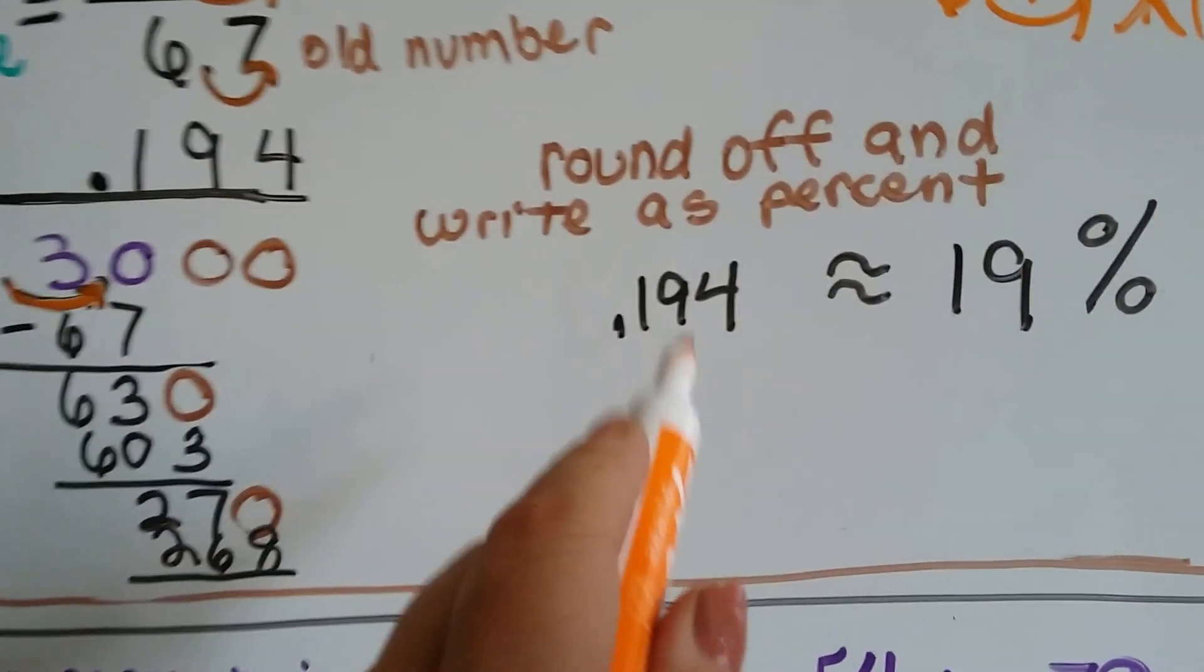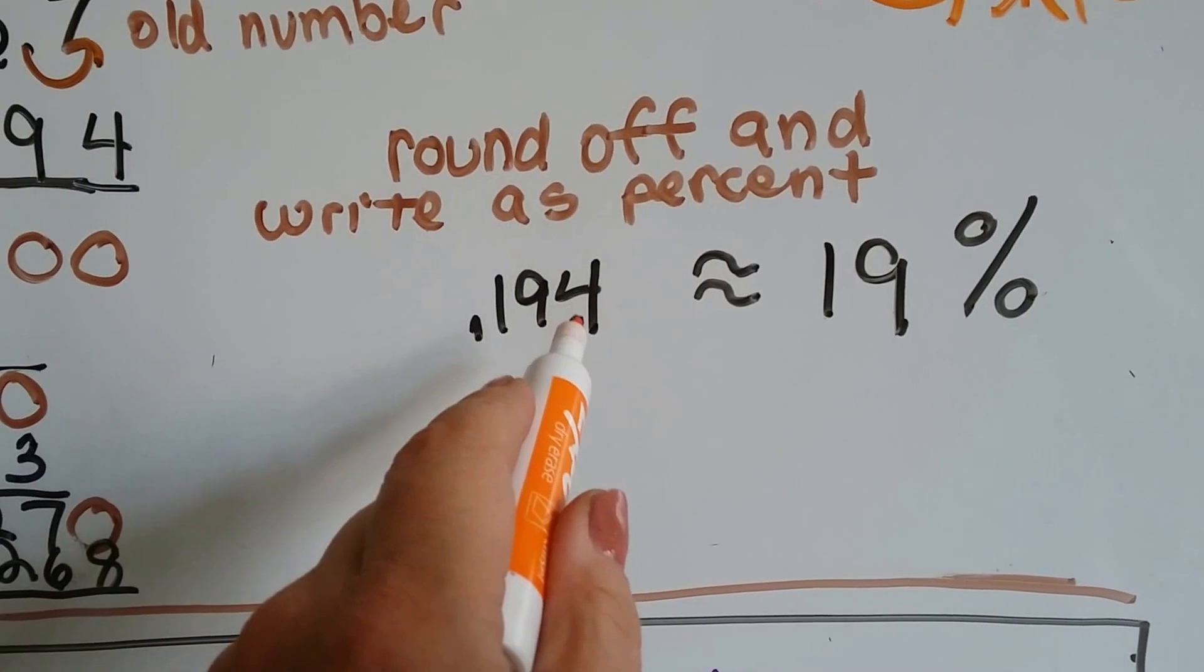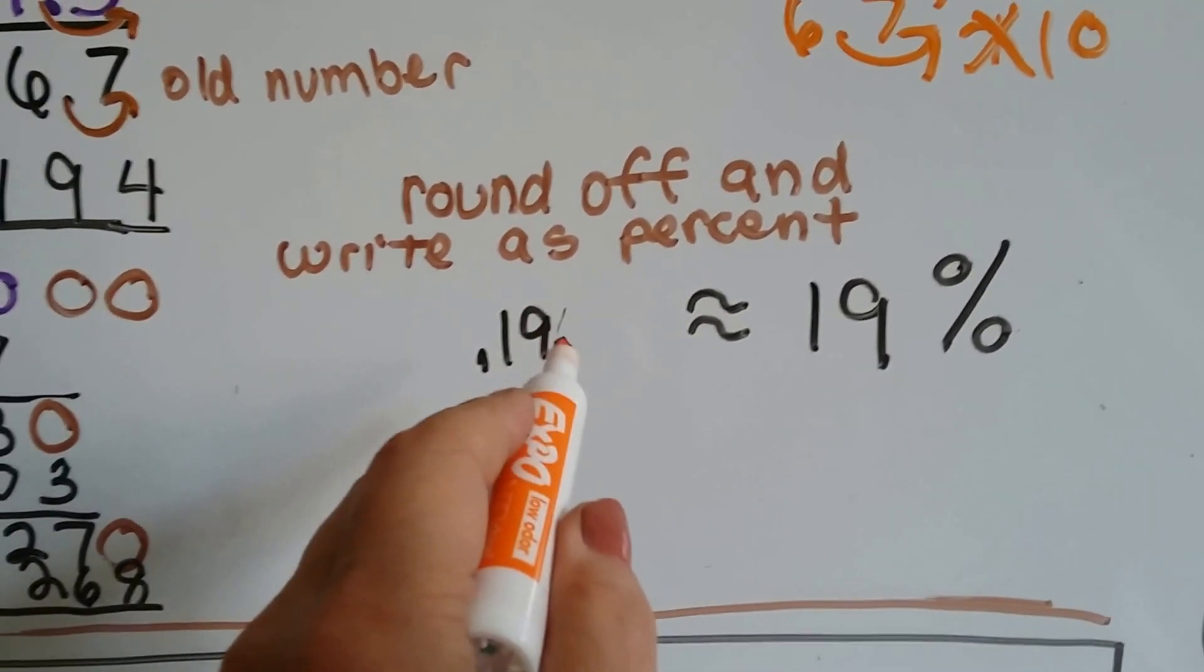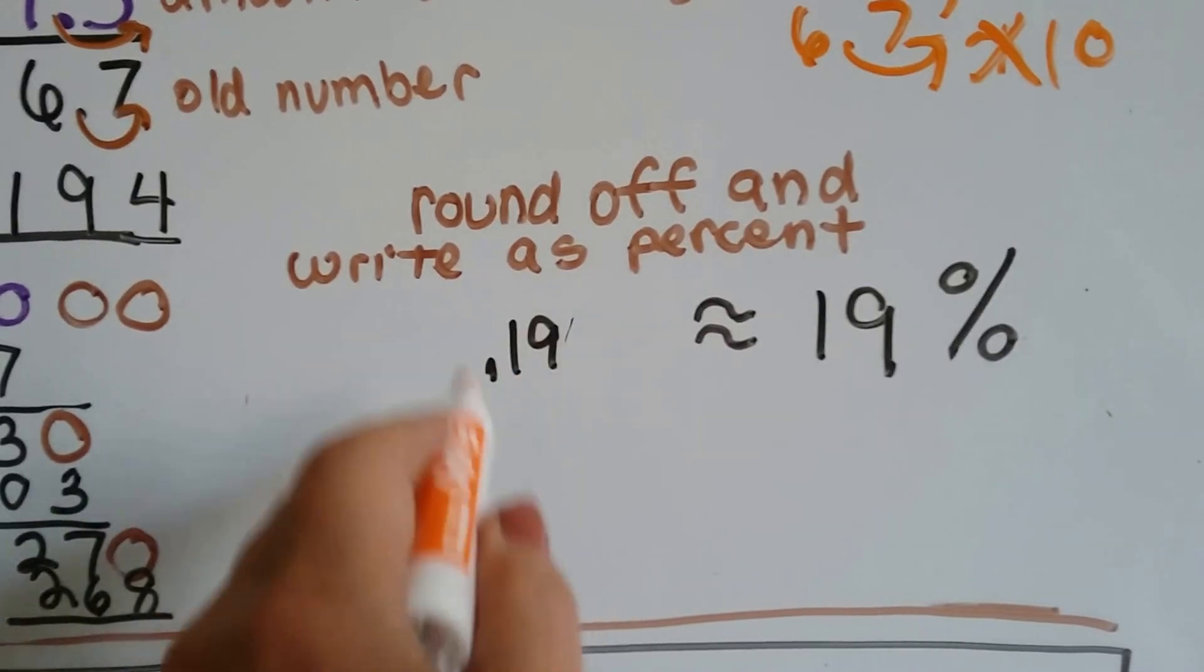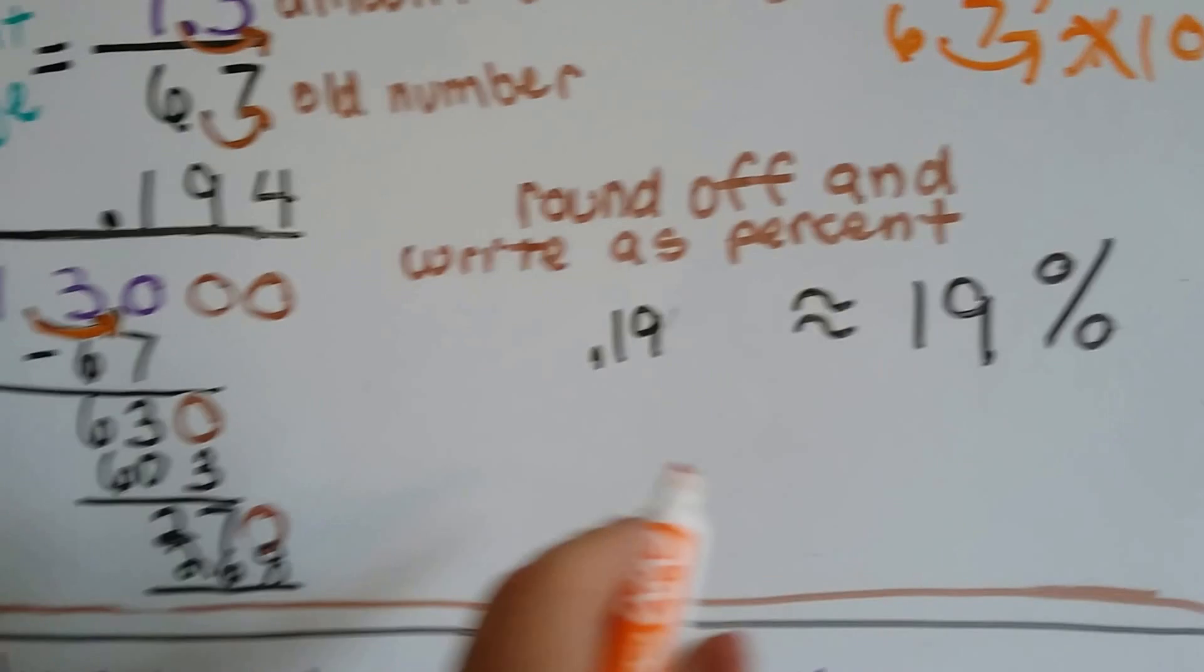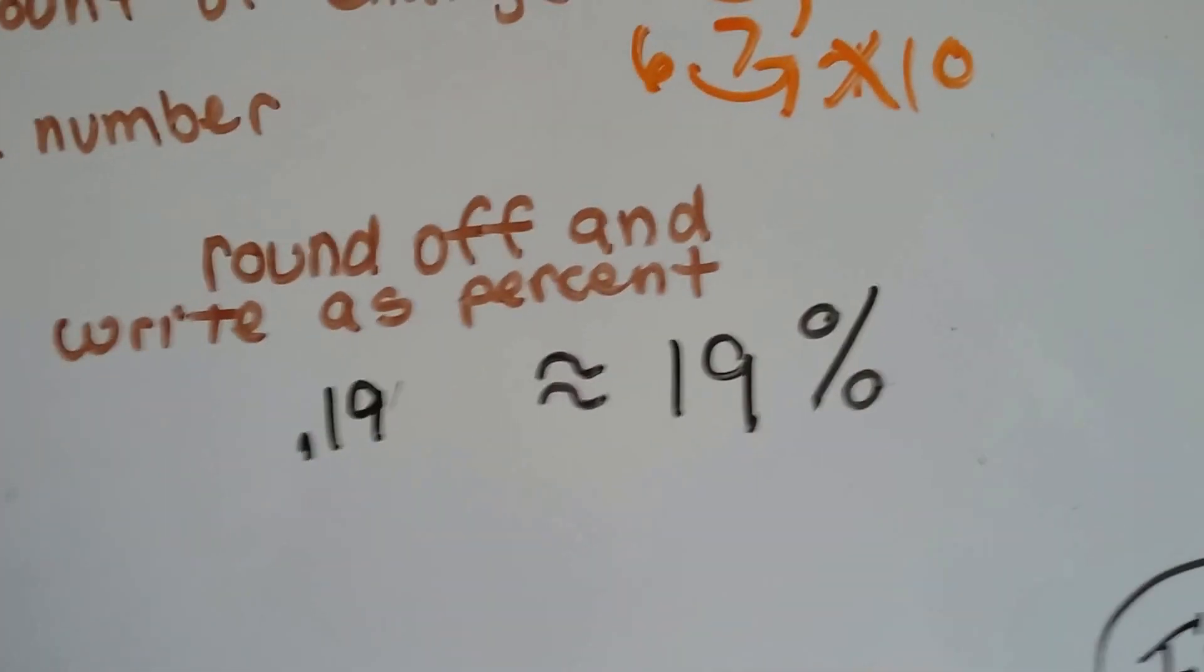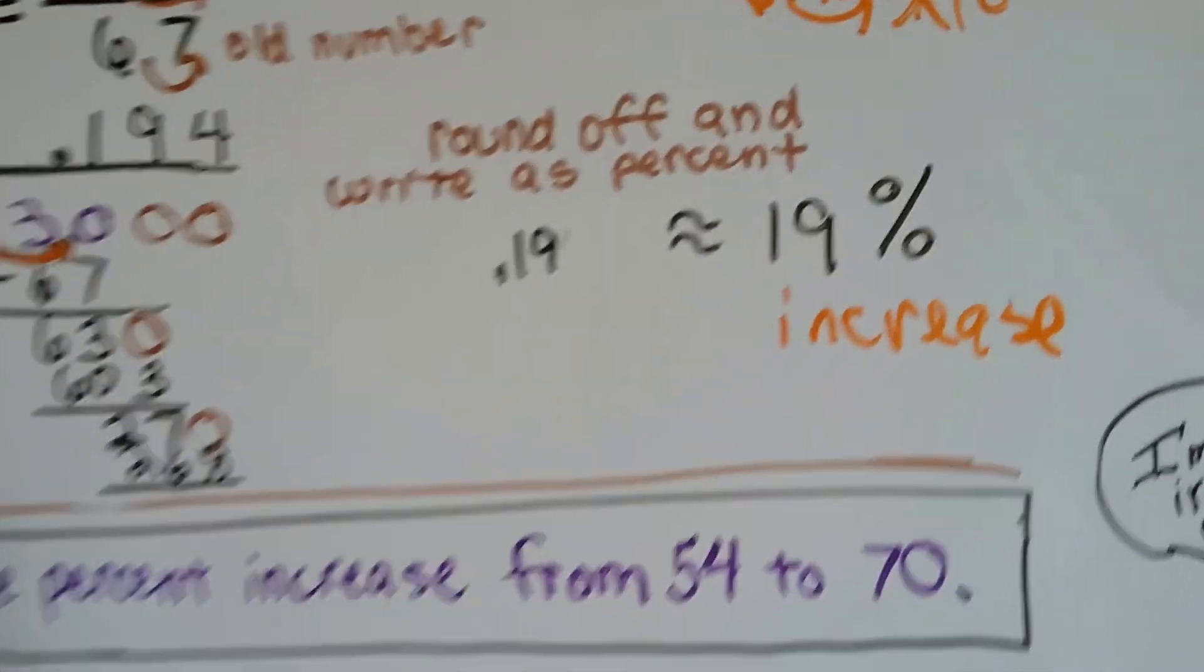Now we've got 0.194. We need to round it off. The 4 tells the 9 to stay the same, and then when he's done with his job, he just goes away. Because it was a 4 there, we're not going to use an equal sign, because we're rounding. It's not an exact equal, it's an approximation, because we got rid of the 4, and it becomes a 19% increase. We have a 19% increase.